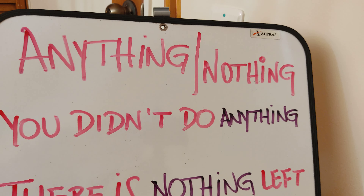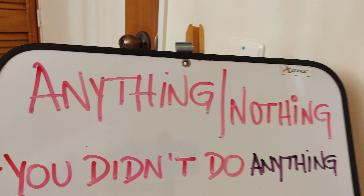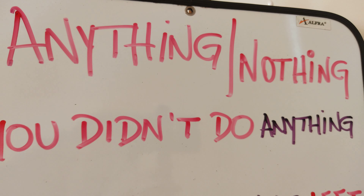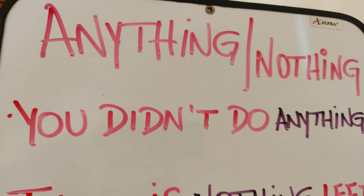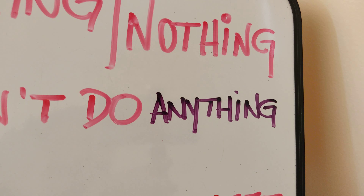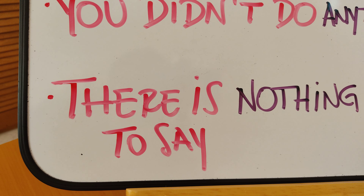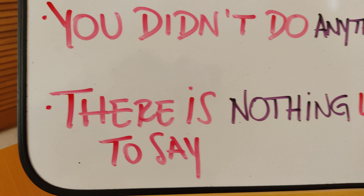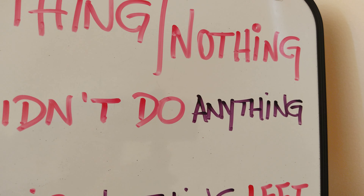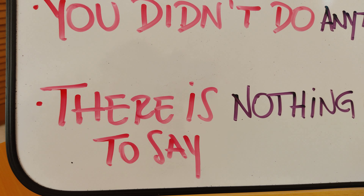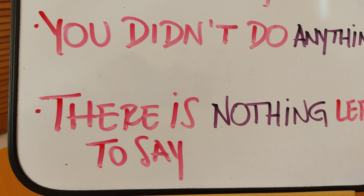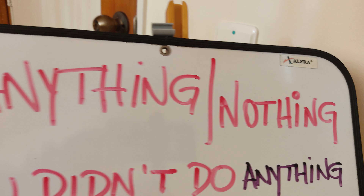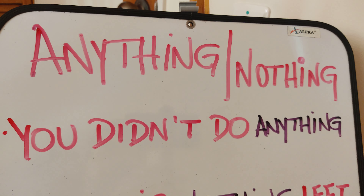In this story, you found these two words: anything, nothing. And you were able to check these two sentences: 'But you didn't do anything.' And then, 'There's nothing left to say.' These two words, anything and nothing, are negative words.